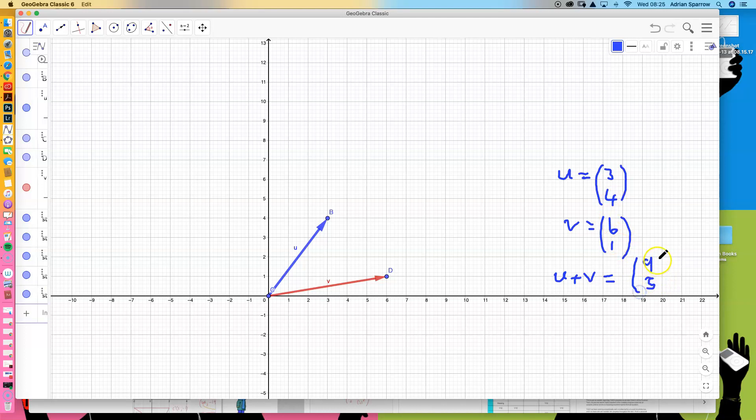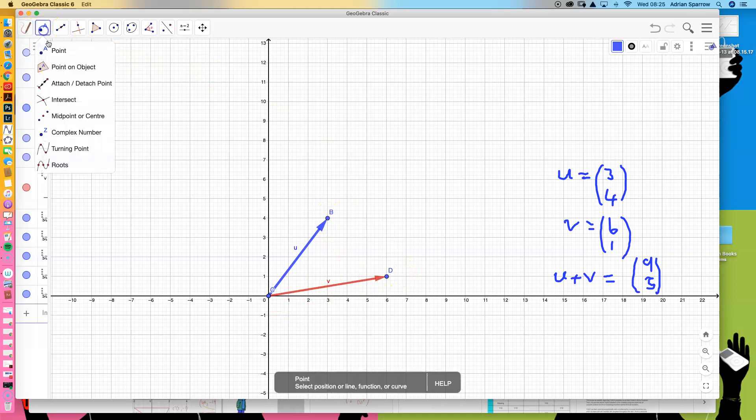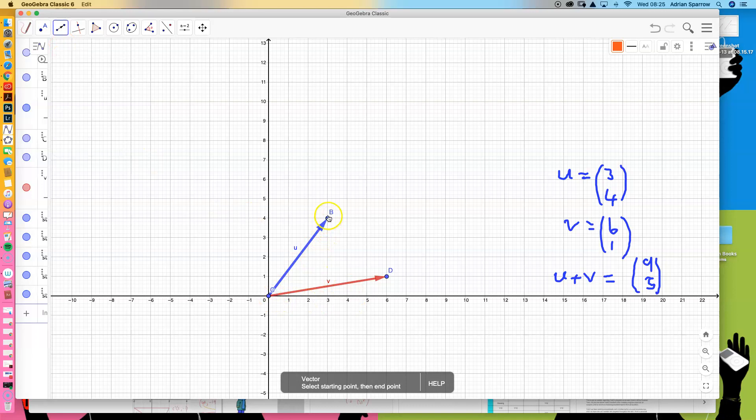Now in geometrical terms, this is like going along u and then adding on vector v. So I'm going to do that. Let's pick up the vector tool here and go along here—that's u—and then I'm going to add v on. Adding v on means I'm going to start from here and go along 6. So 2, 4, 6 will take me to there, and then I'm going to go up 1.